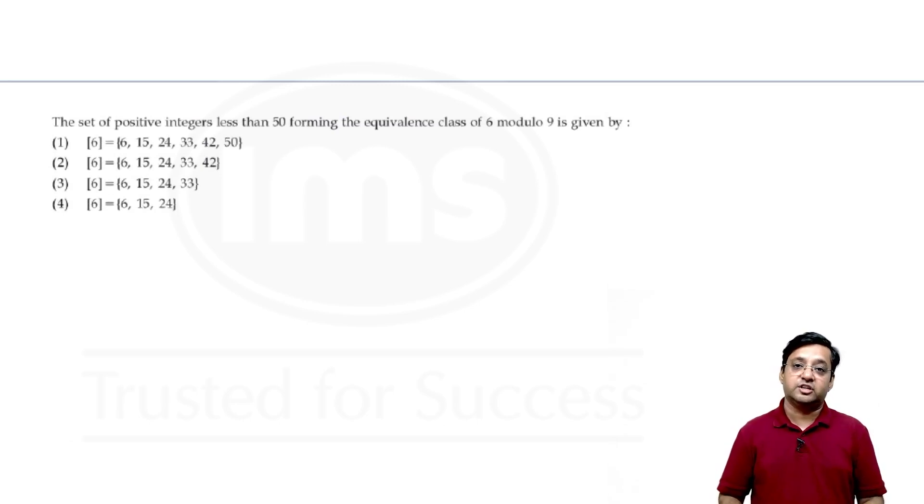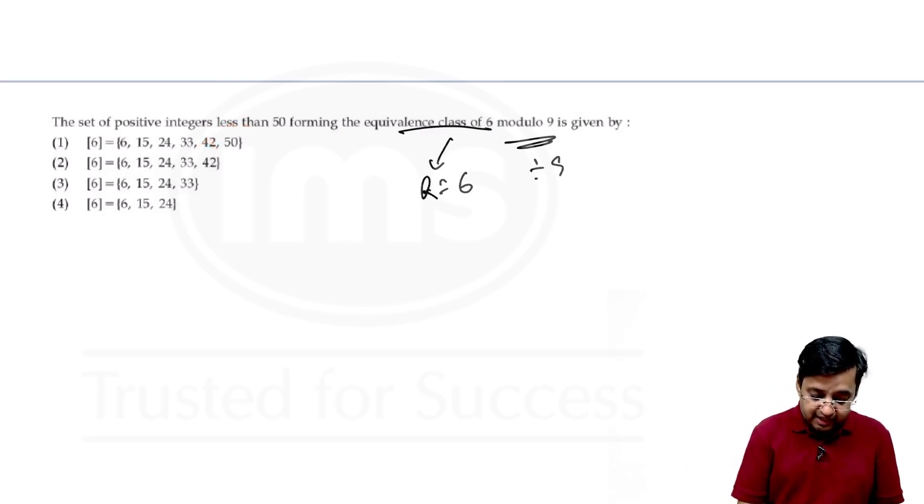Now coming to the third question. The set of positive integers less than 50 forming the equivalence class of 6 modulo 9 is given by. Now modulo 9 means divide by 9 and class 6 here means we are going to get remainder 6 whenever we divide by 9. Let us begin. The first number will be 6. The second number is 15, that is 15 minus 9 is again 6. Then 24 minus 18 is 6 and 33 minus 27 is again 6 and 42 minus 36 is again 6. Can we take 50? No, because the question asks less than 50. So our option would be second.